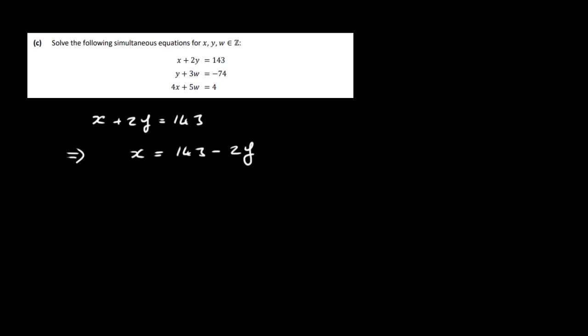Let's substitute that into equation 3. So we've got 4 times 143 minus 2y plus 5w is equal to 4. Let's multiply all this out. So 4 times 143 is 572 minus 2 times 4 is 8y plus 5w is equal to 4. Leave the letters on the left-hand side. So it's minus 8y plus 5w is equal to minus 568.